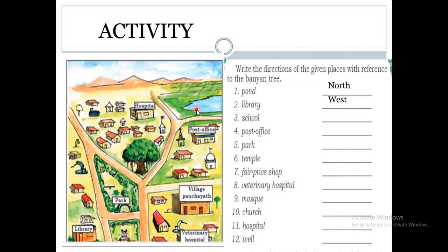Here I have given an example. The first one is pond — pond is in the north direction. Then library — library is in the west direction. Third one is school — school is located in the south direction. Then post office — post office is located in the east direction. The remaining places you have to locate yourself, find the direction, and fill in.